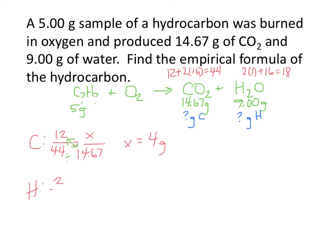We'll do the same thing for hydrogen. Water is 2 times 1 plus 16, which is a total of 18. Hydrogen is 2 out of a total mass of 18 for water, so how much is hydrogen out of a total mass of 9? Cross-multiplying: 2 times 9 divided by 18, and you end up with 1 gram. Notice 4 plus 1 equals 5, so we've done something correct here.